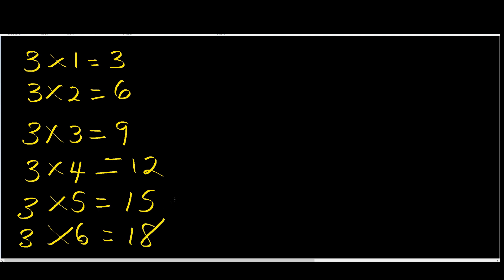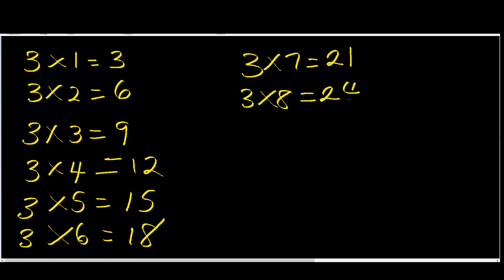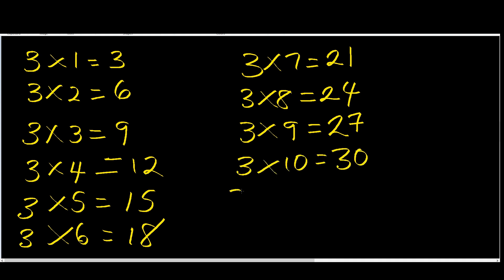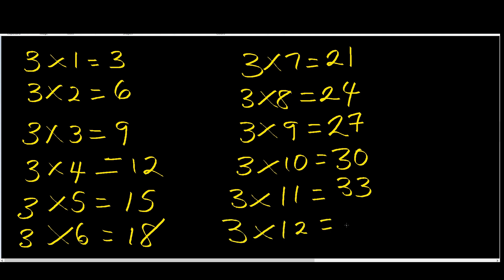What about three times seven? Twenty-one. Three times eight? Twenty-four. Good. Three times nine? Twenty-seven. What about three times ten, Peter? Thirty. How about three times eleven? Thirty-three. And what's three times twelve? Thirty-six.